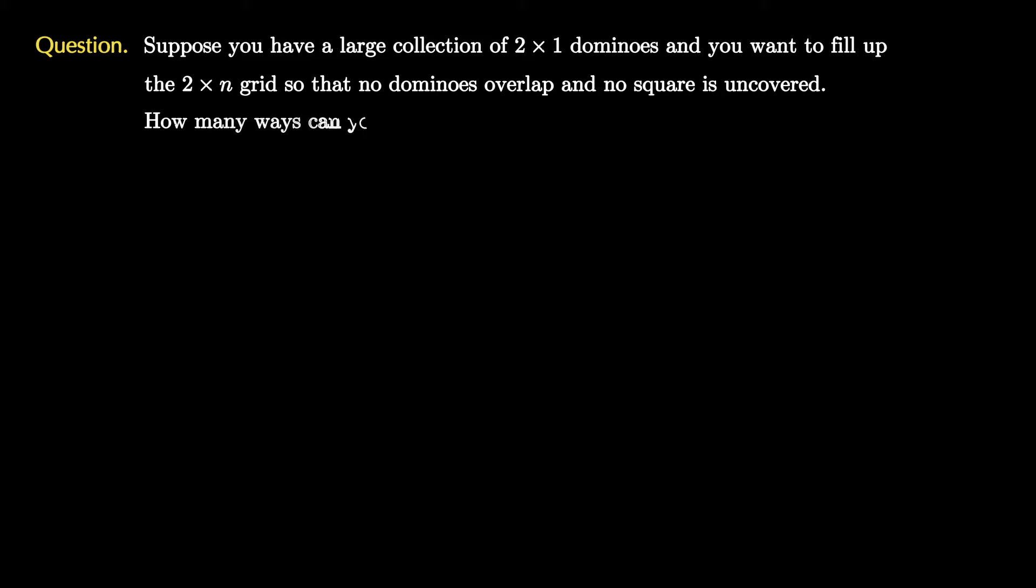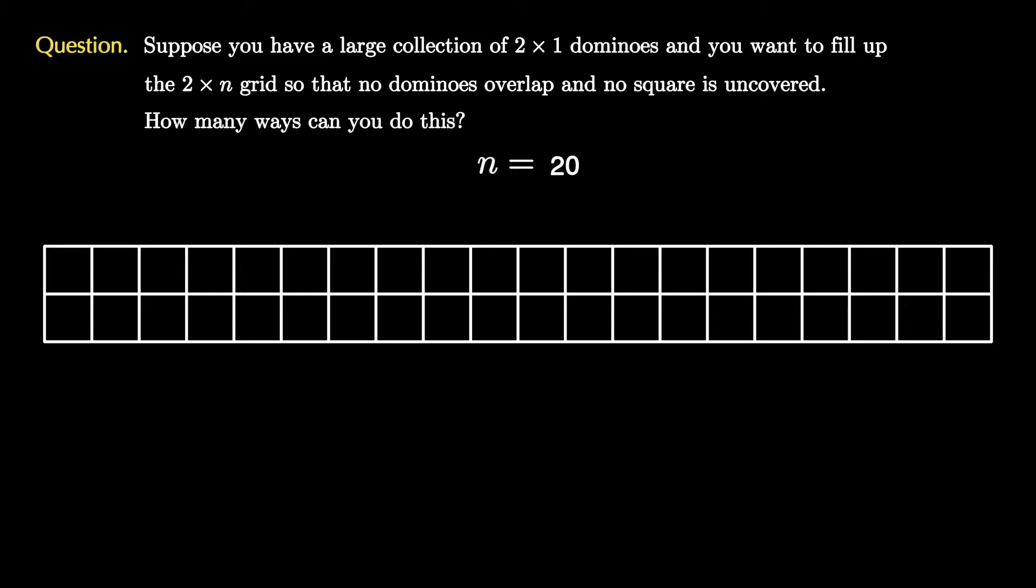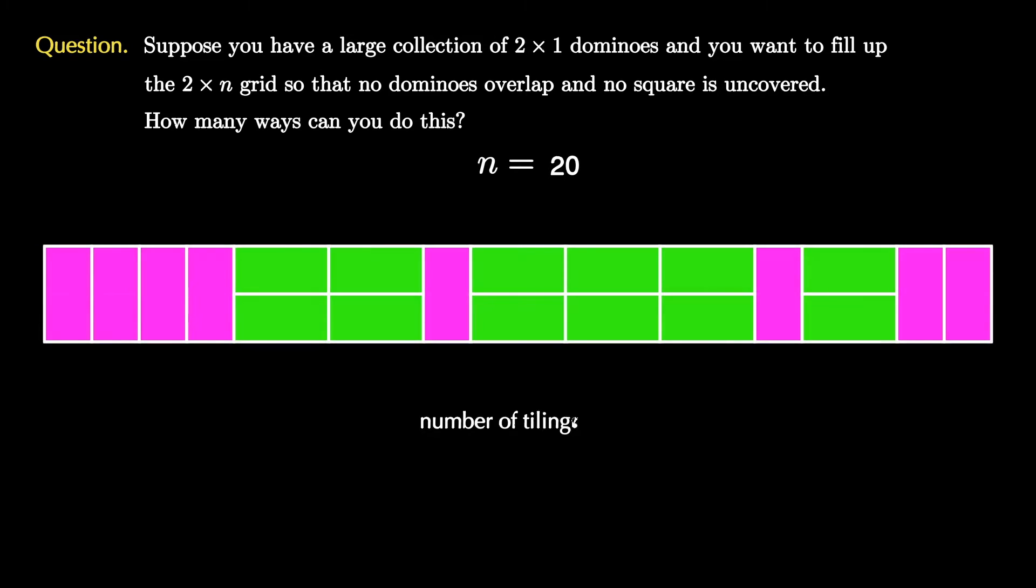The general question that we're interested in is how many ways can you do this for the 2×n board in general? For instance, here is one tiling when n is 20. Can we figure out the total number of tilings for the 2×20 board? What about if n is bigger? The idea we'll pursue is to list off the different counts for various n values and search for patterns.